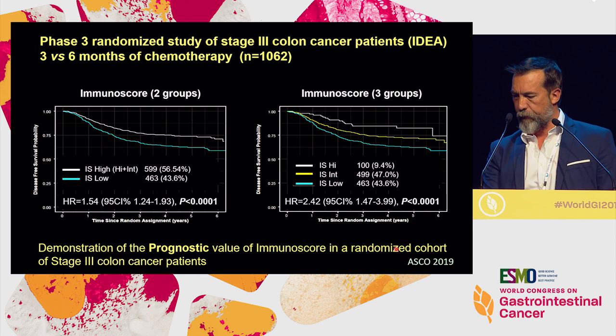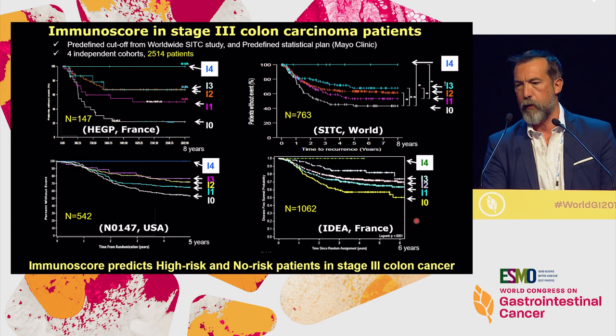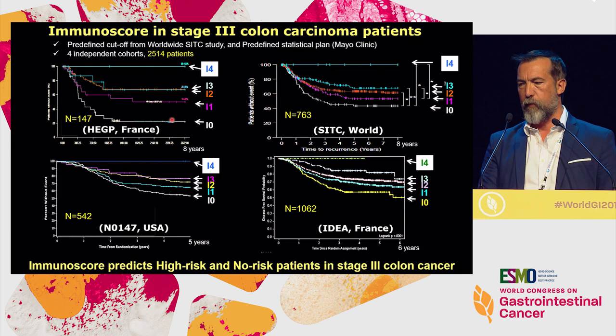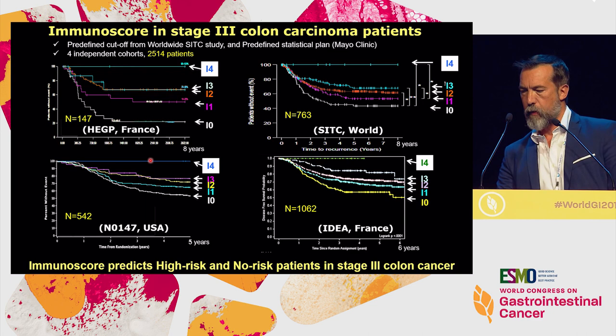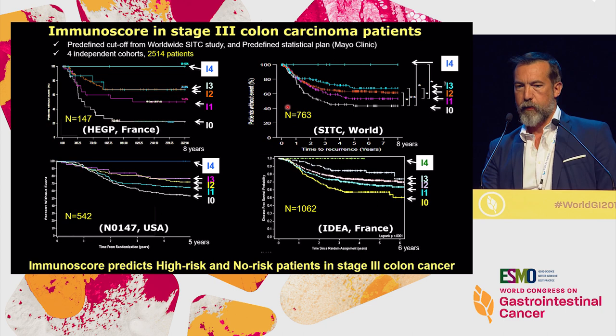This demonstrates the prognostic value of immunoscore on a phase 3 randomized trial. Stratified into five categories — immunoscore 0 (worst) through 4 — patients with immunoscore 4 had not a single relapse in the French cohort, not a single relapse in the SITC study, not a single relapse in N0147, and not a single relapse in the IDEA clinical trial. All these patients are stage 3, and there is a direct relationship between immunoscore and the survival and relapse rate across all four independent datasets.